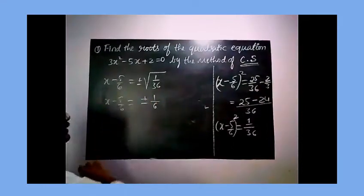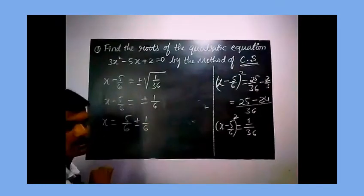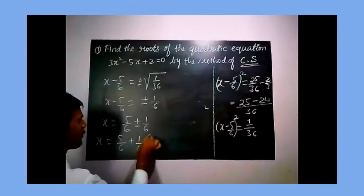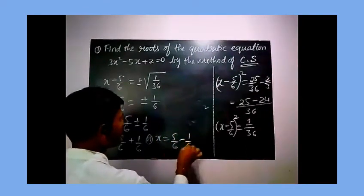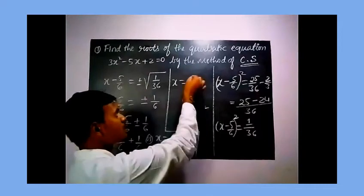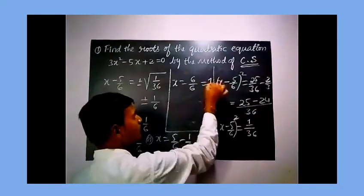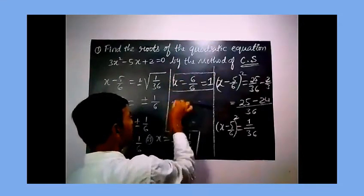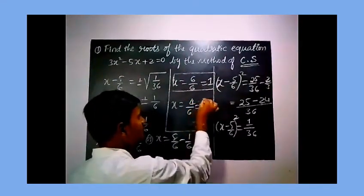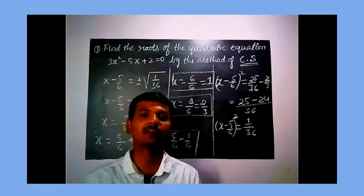We consider the positive and negative values separately. For the positive case: x equals 5/6 plus 1/6 equals 6/6, which equals 1. For the negative case: x equals 5/6 minus 1/6 equals 4/6, which simplifies to 2/3. So the two roots for the given quadratic equation by the method of completing the square are x equals 1 and x equals 2/3.